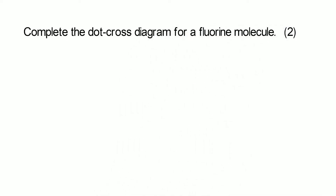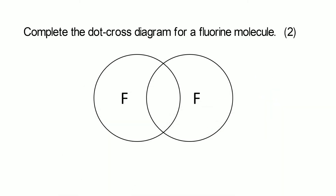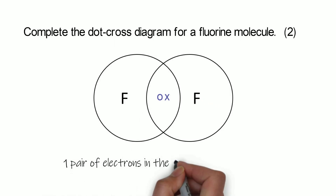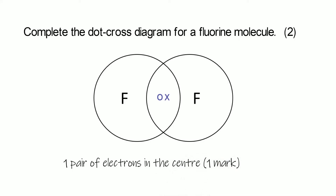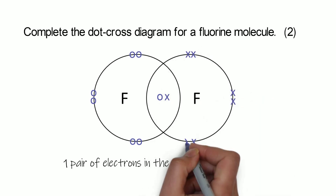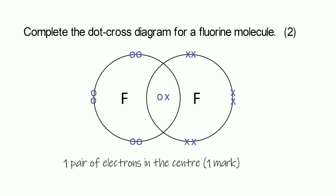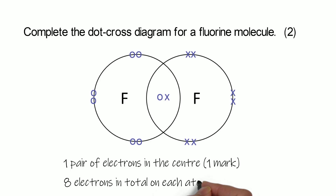Fluorine is very similar — it's also in group seven, so it has seven electrons in its outer shell and wants to gain one more. Maybe pause the video and see if you can work it out. Because fluorine needs to gain one electron, it forms one covalent bond, so we draw a single dot-cross pair in the centre — that counts as one bond. Then we fill in an extra six on each atom around the edges so each atom has eight electrons in its outer shell. First mark for the right number of bonds; second mark for the full outer shell.